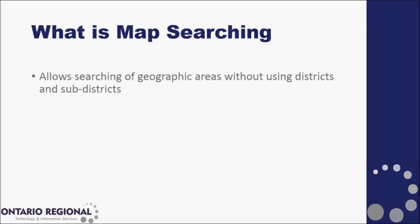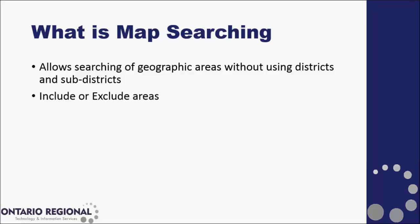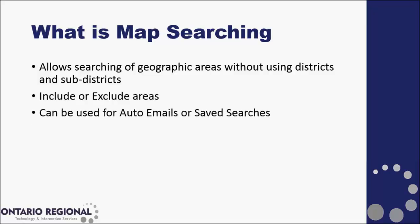Map searching is used when you want to search in geographic areas without being restricted by districts and sub-districts. You can use it to both include and exclude areas with your search, and it can be used for your criteria for auto emails and saved searches for your clients.